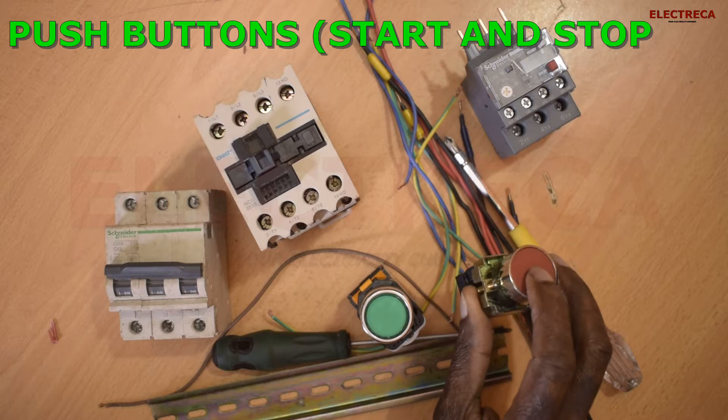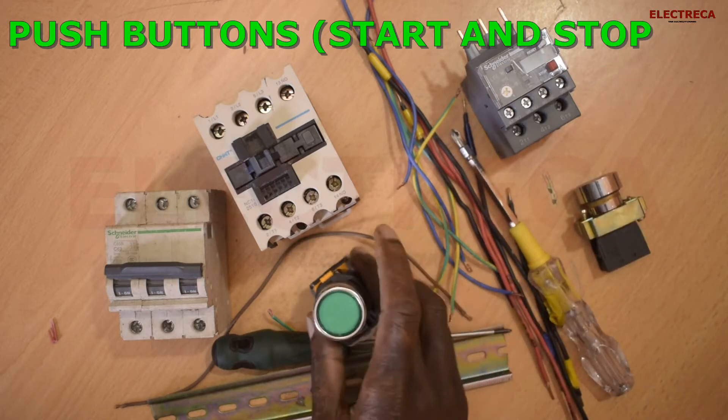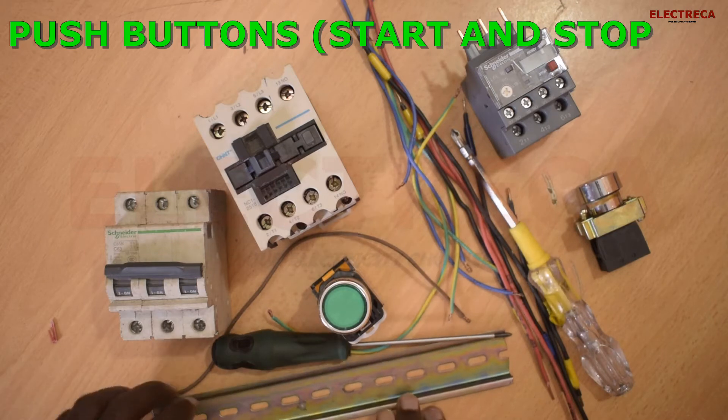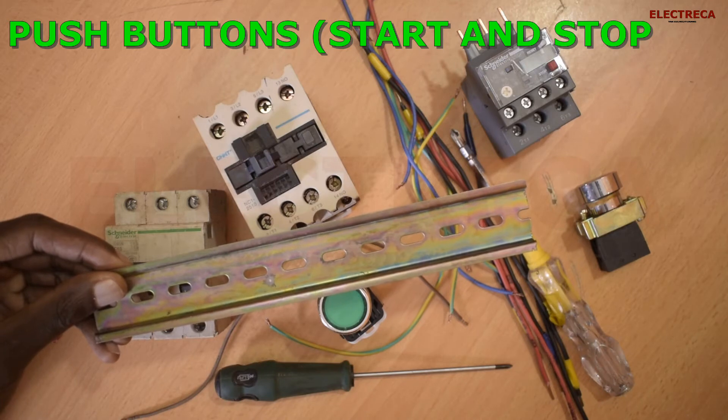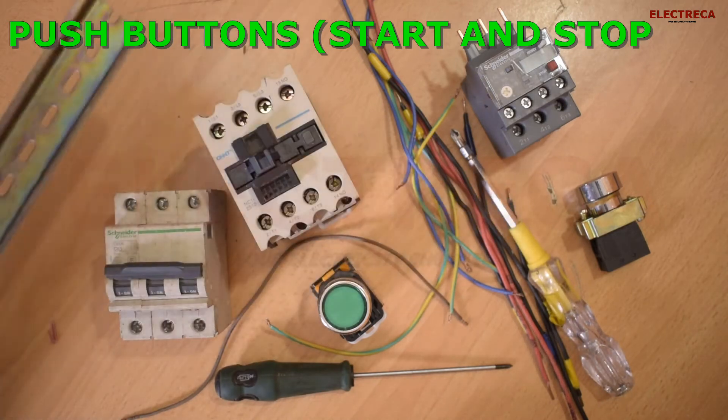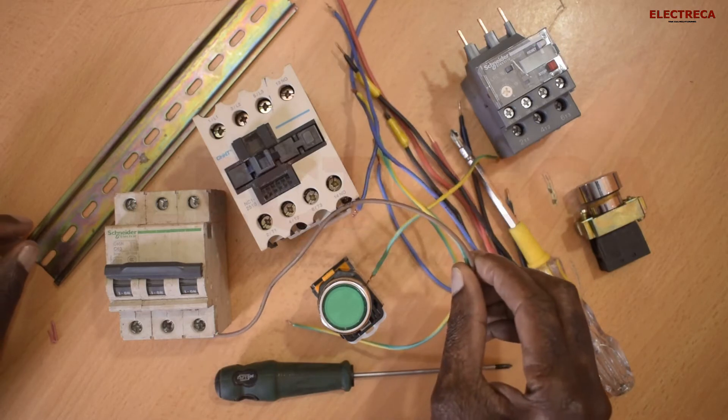Then you're going to need these buttons - the red one for stop and the green one for start. You'll need a rail if you're going to incorporate these things in the box.